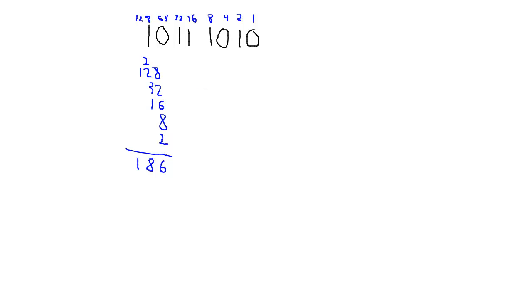So there we go, 186. And then how would I convert that to hexadecimal? Well, I haven't shown you how to convert a decimal number to hexadecimal, but I have shown you how to convert a decimal number to binary. And the idea is still the same as what we did with binary.